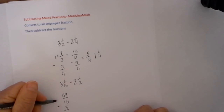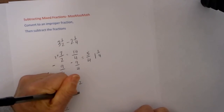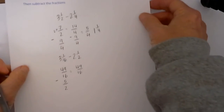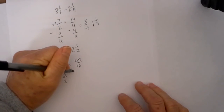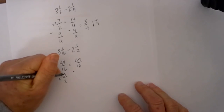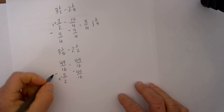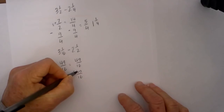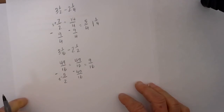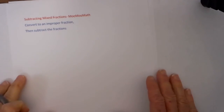So now I find a common denominator, which will be 16. 16 will go into 16 one time, so this is 49 over 16, minus — 2 will go into 16 eight times, and 8 times 5 is 40 — so 40 over 16. I now subtract them: 49 minus 40 is equal to 9 over 16, and I cannot simplify that fraction further.